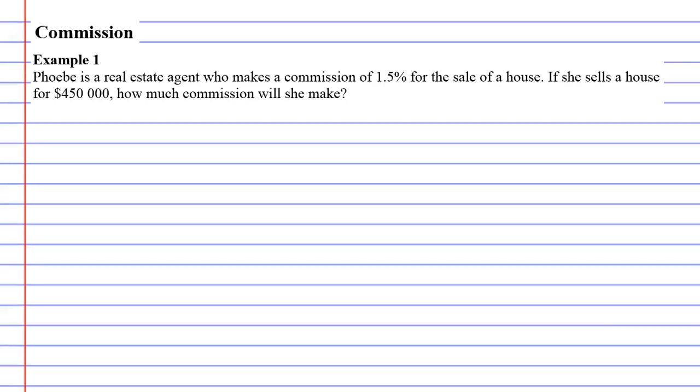Commission example one. Phoebe is a real estate agent who makes a commission of 1.5% for the sale of a house. If she sells a house for $450,000, how much commission will she make? We've spoken earlier about how